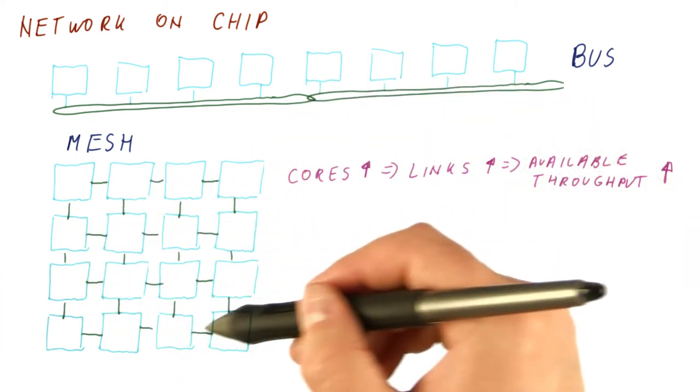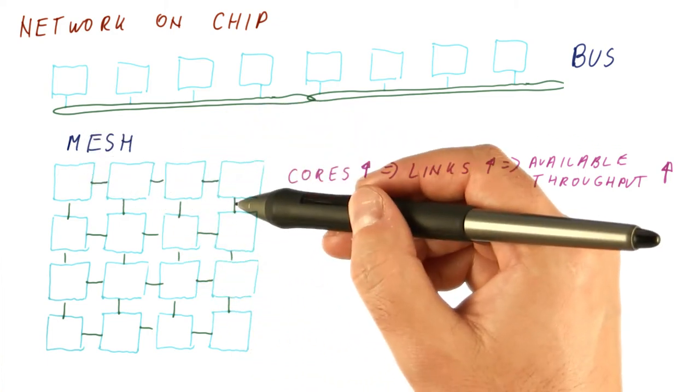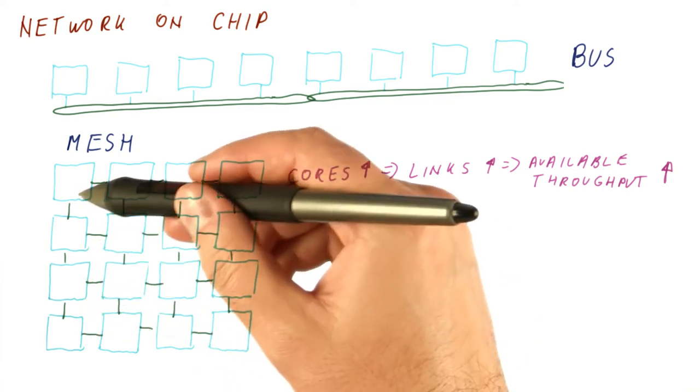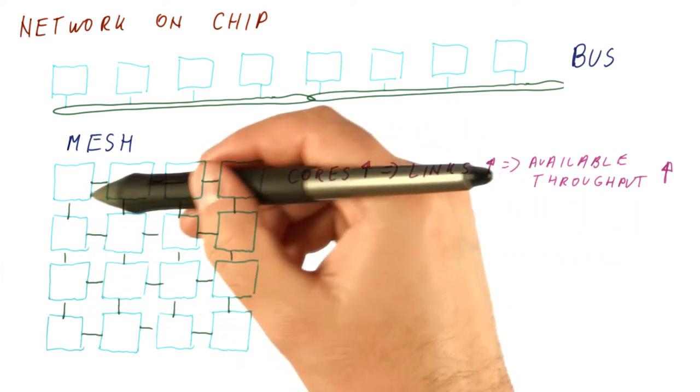There are many types of these so-called point-to-point networks. A mesh is one of those that is very good for chip building because none of these links intersect each other.